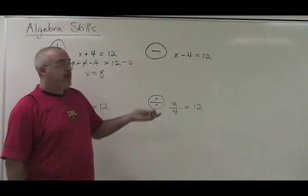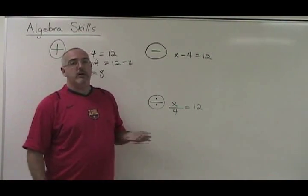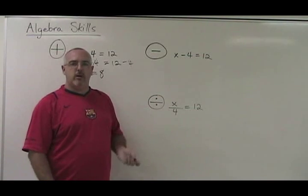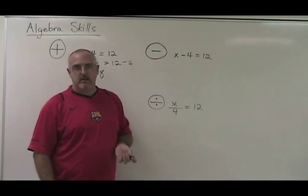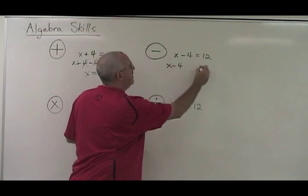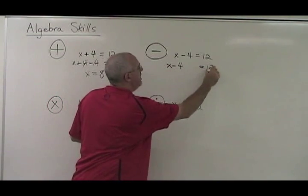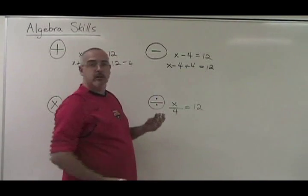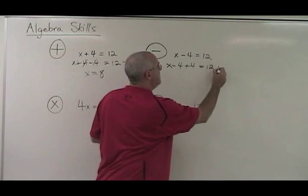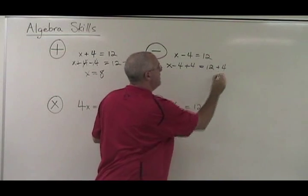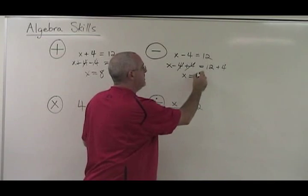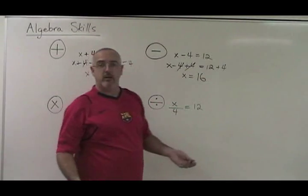Now, subtraction. X minus 4 equals 12. What is X? We have this minus 4 with our X — we don't want it there, we want to isolate the X. So we do the opposite: X minus 4 plus 4 would be the opposite of minus 4. But if we're going to do a plus 4 on the left, we have to do a plus 4 on the right.